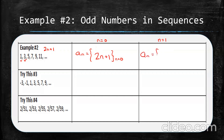If you want to shift the index to start at n=1, just subtracting 1 from n gives 2(n-1) plus 1. Test it: n=1 gives 2(0)+1=1; n=2 gives 2(1)+1=3. So it works. You can simplify 2(n-1)+1 to 2n minus 2 plus 1, which is 2n minus 1. So 2n minus 1 gives all the odd numbers when your index starts at 1.